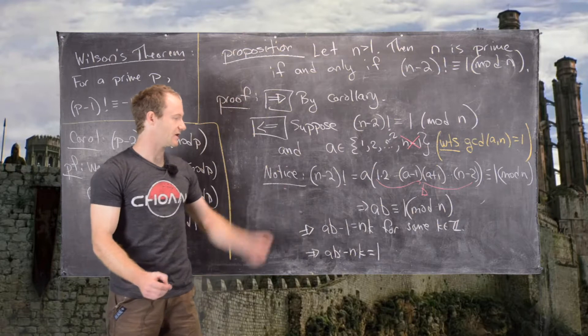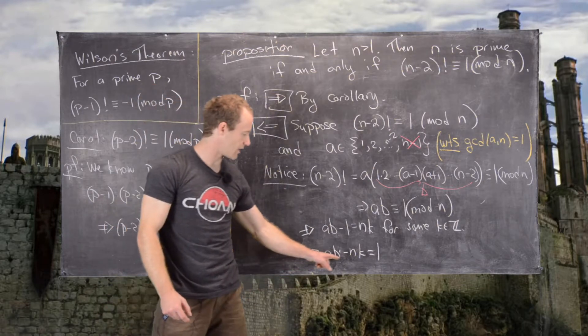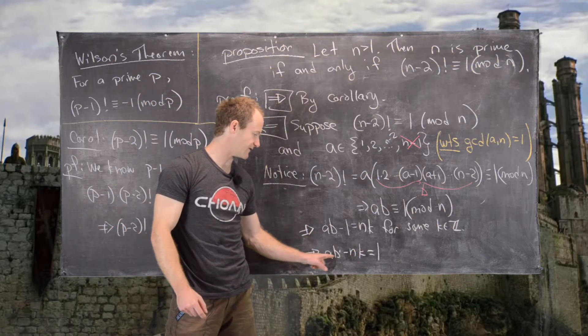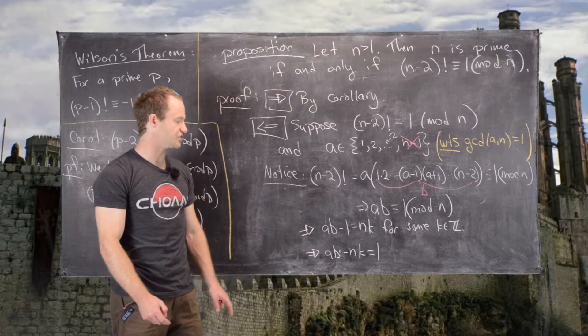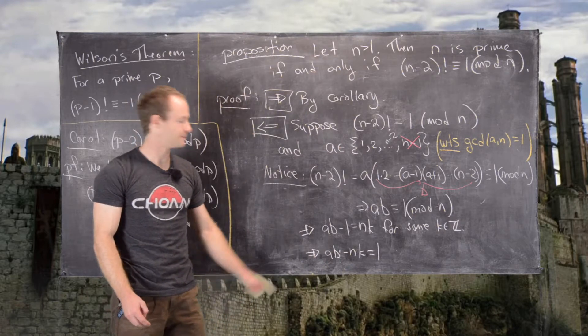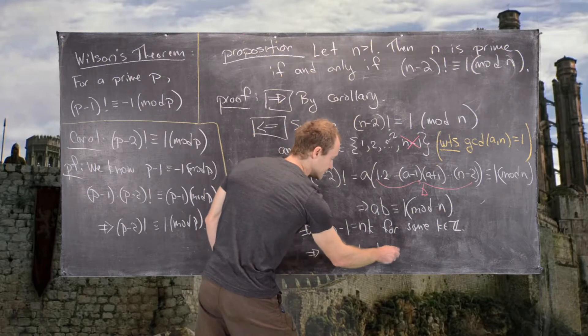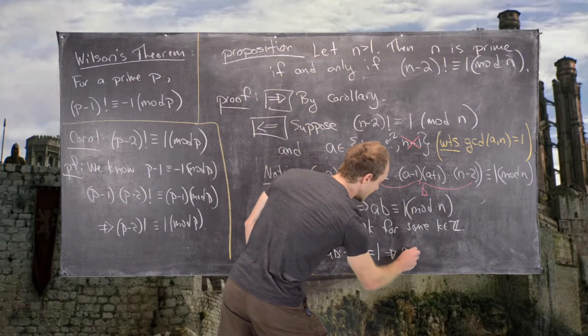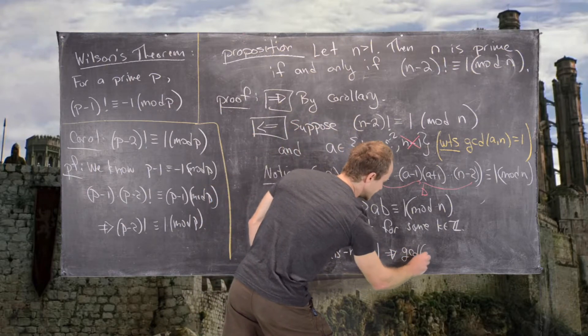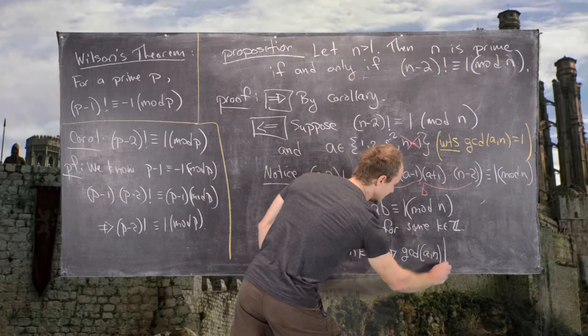Now, I'll do this verbally, but recall that all linear combinations of a and n are multiples of gcd(a,n).